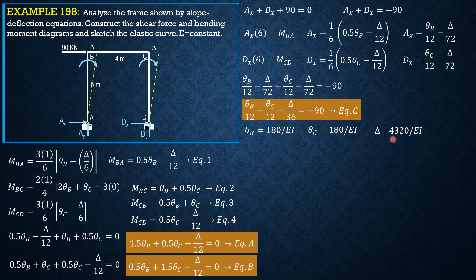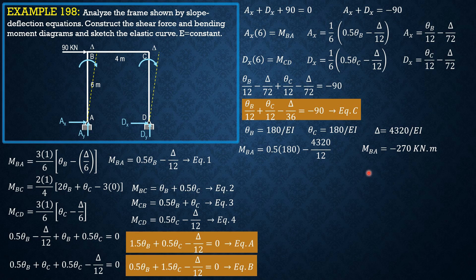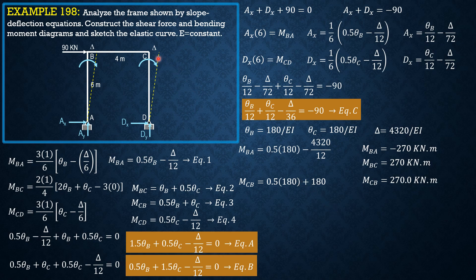Since delta is positive, the assumed direction of sidesway is correct. We now compute the moments: MBA equals 0.5 times (180) minus 4020 over 12, giving MBA equals negative 270 kN·m. Therefore MBC equals positive 270 kN·m. MCB equals 0.5 theta_B plus theta_C, giving positive 270 kN·m, and MCD equals negative 270 kN·m.